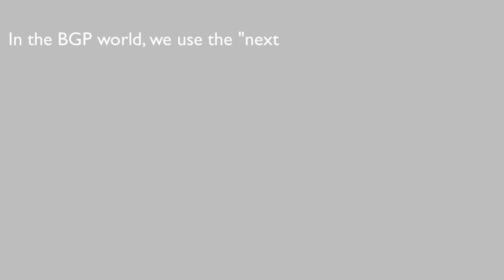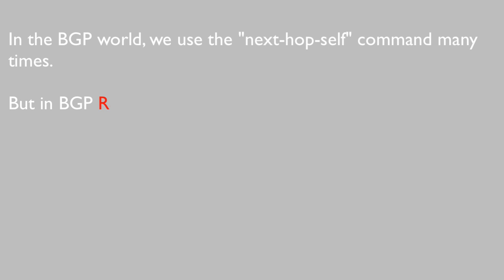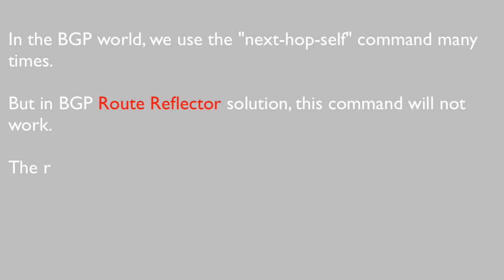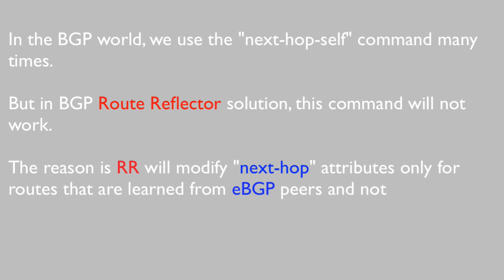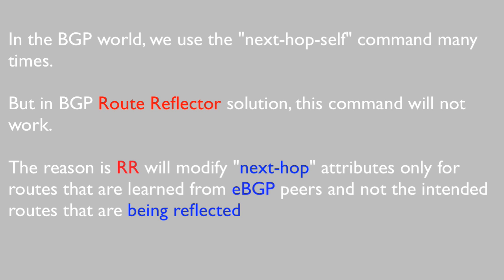In the BGP world, we use the next-hop-self command many times. But in a BGP route reflector solution, this command will not work. The reason is that the route reflector will modify next-hop attributes only for routes that are learned from eBGP peers, and not for the routes that are being reflected from the route reflector clients.